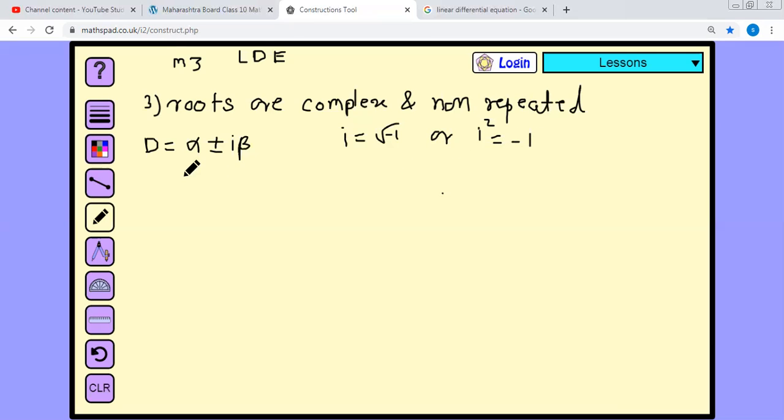Complementary function can be written as yc is equal to e raise to alpha x in the bracket, C1 cos beta x plus C2 sin beta x. This is Case Number 3, roots are complex and non-repeated.